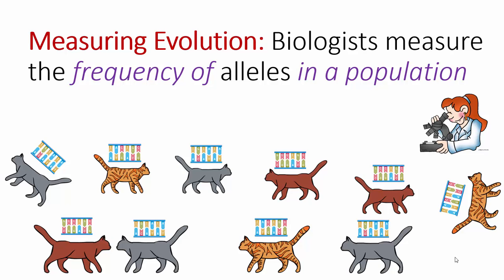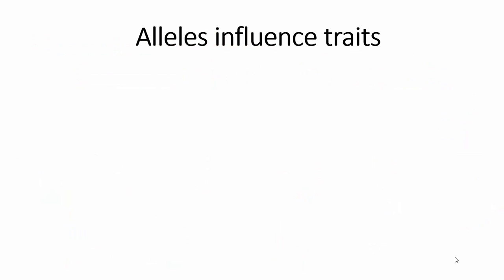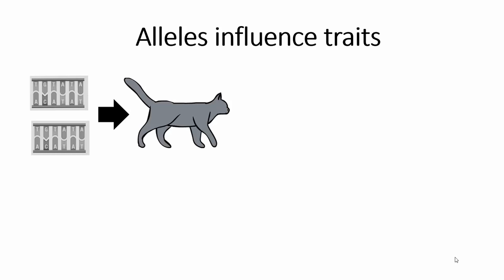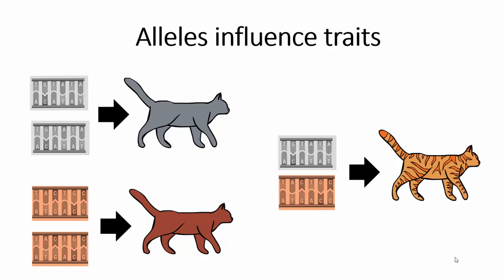We could go out and look at a population of cats and measure the frequencies of different cat alleles. Each cat, just like in humans, is actually going to carry two copies of every chromosome, so they're going to have two copies of each allele. The combination of these alleles — which is called a genotype — will actually give rise to the trait. So if a cat has two gray alleles, it's going to be gray; two brown alleles, it turns out brown; and if it inherits one gray allele and one brown allele, it will turn out to be an orange cat.